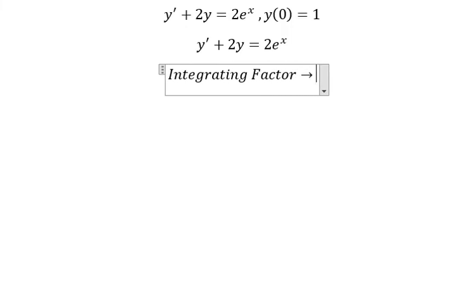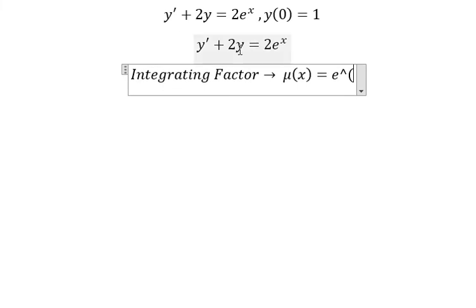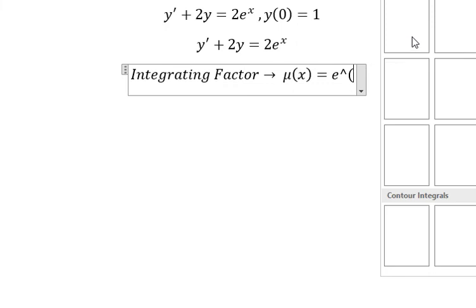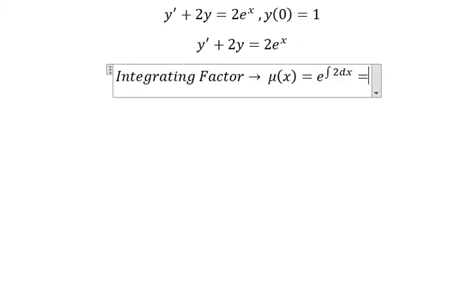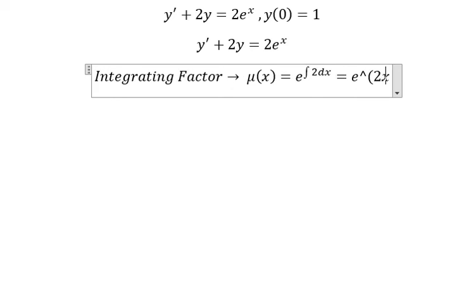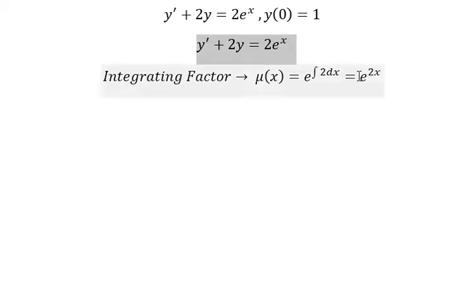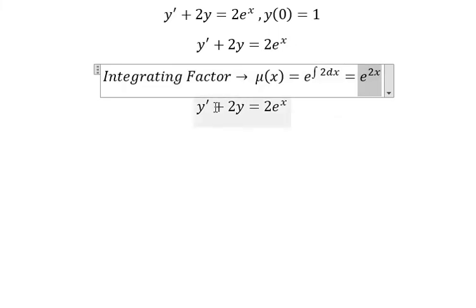We calculate mu(x) equals e to the power of - we have number 2 next to y - so the integral of 2dx equals e to the power of 2x. That means we need to multiply both sides by e to the power of 2x.